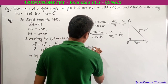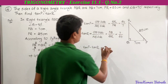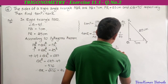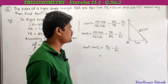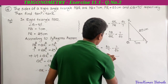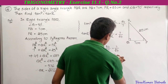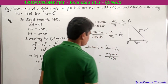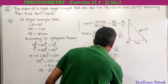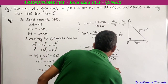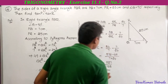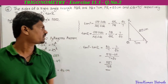Therefore tan P minus tan R equals 24 by 7 minus 7 by 24. LCM is 7 into 24. Numerator becomes 24 into 24 minus 7 into 7, which is 576 minus 49, giving 527. So the result is 527 divided by 168.